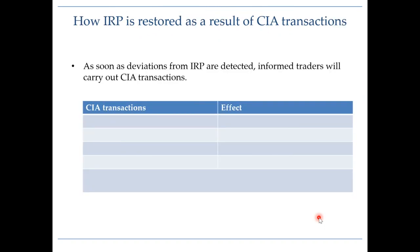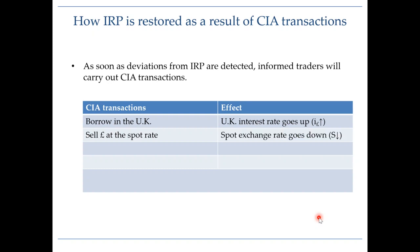Next, let's see what happens to interest rate parity as more and more people undertake these transactions. Initially, interest rate parity was not holding, which is why we went out and undertook these transactions. If everyone starts borrowing in the UK, there will be much more demand for funds in the UK, which will raise UK interest rates. Everyone will also be taking those borrowed pounds and selling them in the spot market, which will lower the spot exchange rate for pounds. With everyone investing in the US, the US interest rate will go down, and finally, with everyone agreeing to buy pounds in the forward market, the forward rate for pounds will go up.